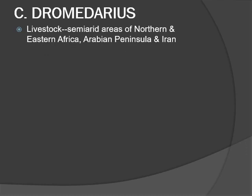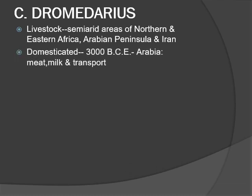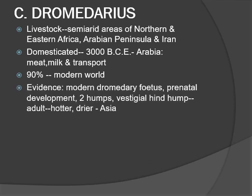Camelus dromedarius is the most important livestock animal in the semi-arid areas of northern and eastern Africa as well as in the Arabian Peninsula and Iran. The one-humped camel was domesticated about 3,000 BCE in southern Arabia, mainly for its meat, milk, and transport. They account for approximately 90% of all the camels in the modern world. Some evidence states that modern dromedary camels during prenatal development have two humps, and also a vestigial hind hump in adult dromedaries.